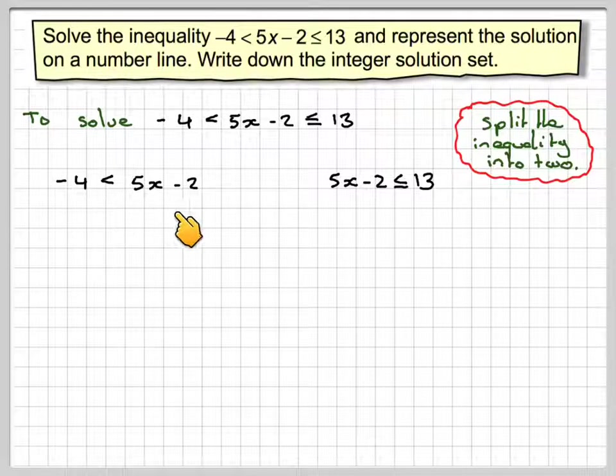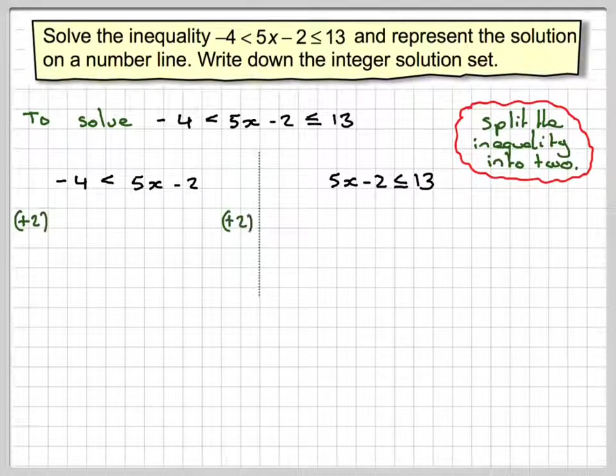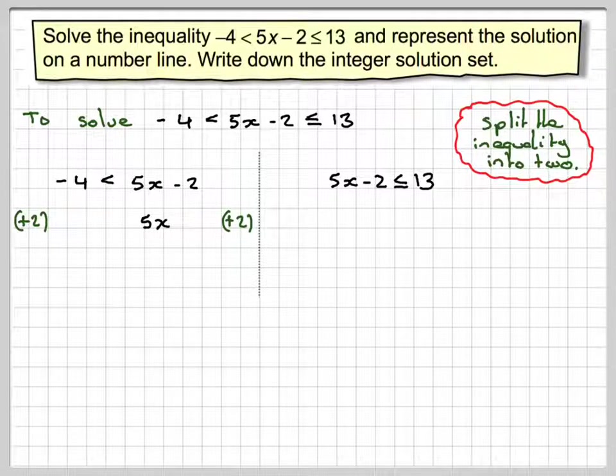Right, we now solve this the normal way. The first thing would be to add 2 to both sides. So if you add 2 to minus 4, you get minus 2, and you get 5x.